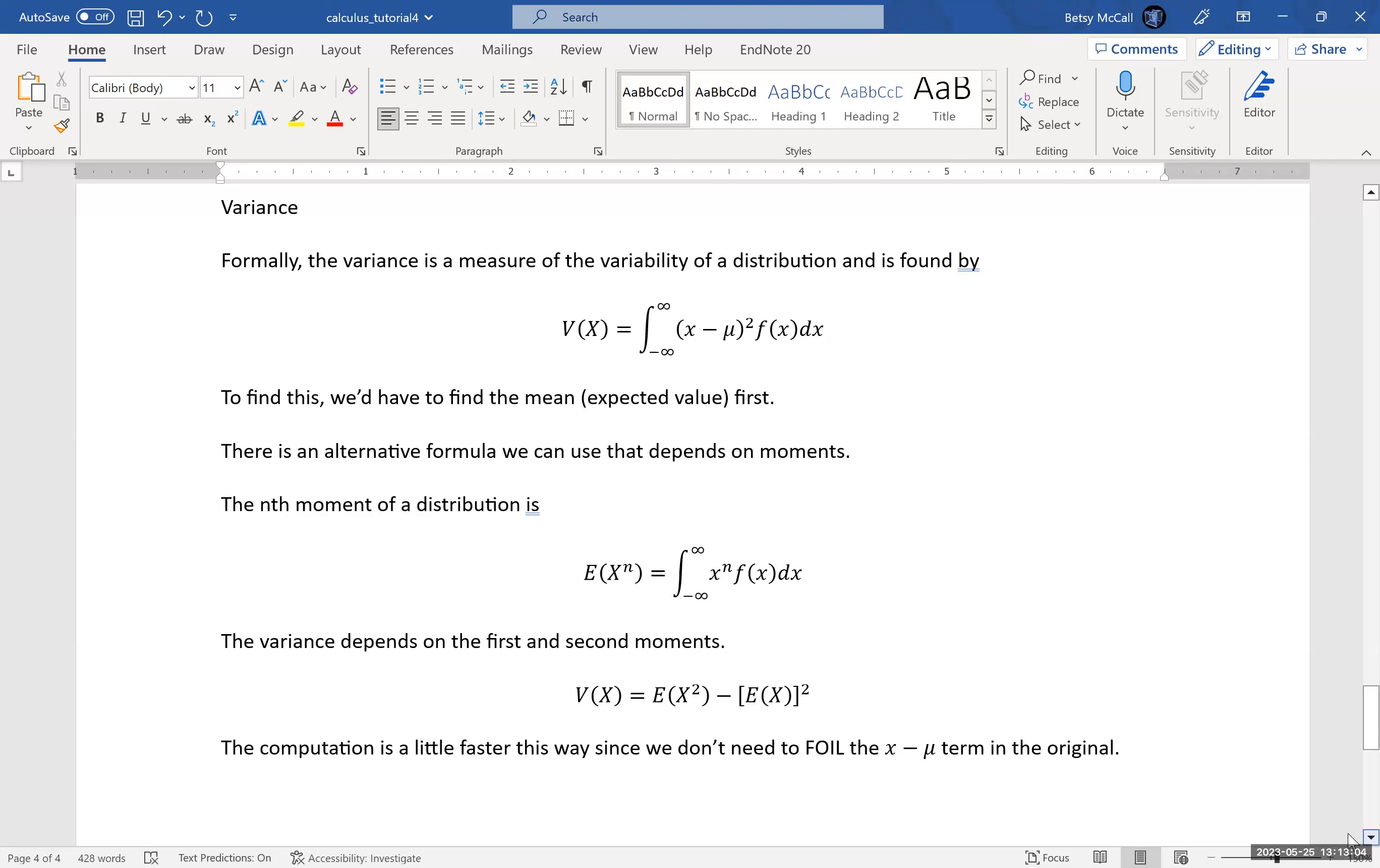The formal definition of the variance is to multiply the function, the original probability density function, by (x - μ)². Where μ is the mean. First you would have to calculate the expected value, which we got 3/5, and then do this calculation. You would have to foil this out. It's a mess. So this is not necessarily always the most efficient way. You will get the correct answer assuming you make no arithmetic mistakes, but this is not always the most efficient way to finding the value of the variance.